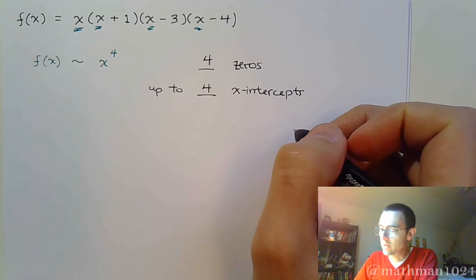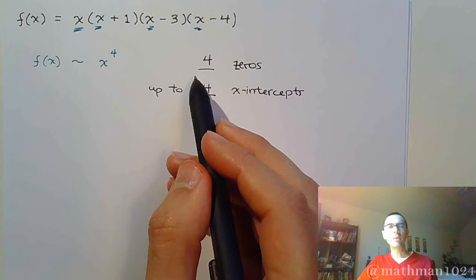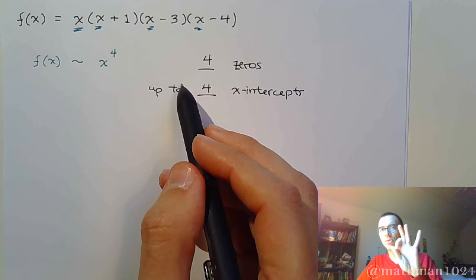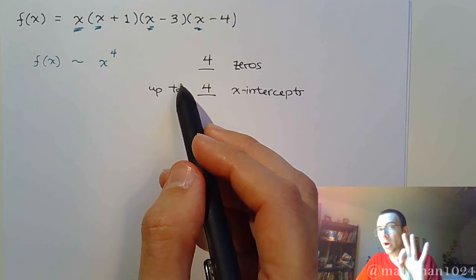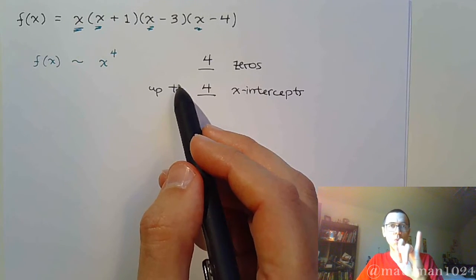And in terms of the turning points, the turning points are going to be the degree less one. So it's degree four. So now we're going to have three turning points or less than that by a multiple of two. So take two off of this. One.